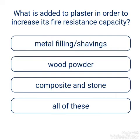Question: What is added to plaster in order to increase its fire resistance capacity? Options: metal filings or shavings, wood powder, composite and stone, all of this. The answer is all of this.